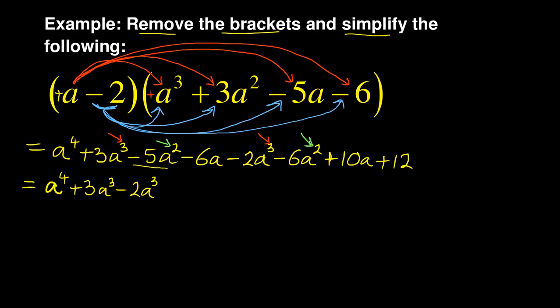Don't forget, you must take it with the number and the sign. So it is minus 5A squared and minus 6A squared. The next part I look for is the A — I've got that A and that A. Don't forget to take it with the sign, so it is minus 6A plus 10A. And lastly is the number, which is 12 — just plus 12. You must check to make sure you didn't forget any, which is why I mark them with my pencil and erase after.